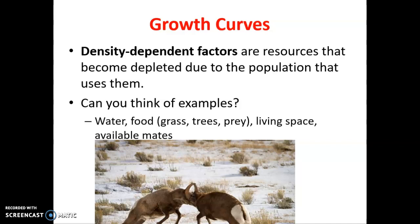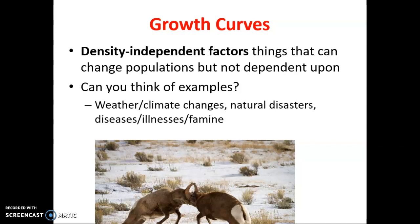Density independent factors, however, are things that happen to an area and change the population regardless of its size — think natural disasters. Examples include forest fires, avalanches, weather, and climate changes. Disease and famine might sometimes relate to this, but they're more so density dependent factors. Density independent factors change the population but are not things the population requires in order to go up or down.